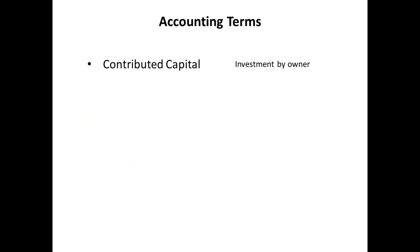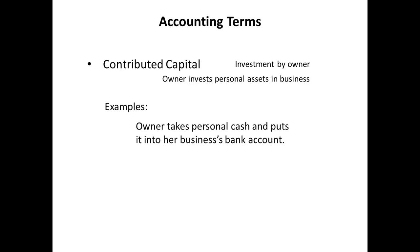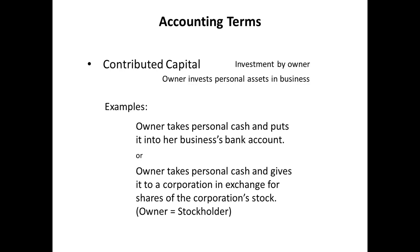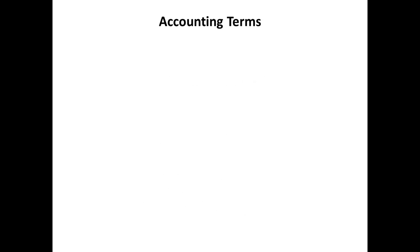The next term is contributed capital. We define this as investment by owner. An investment by owner means that an owner took personal assets and transferred them into the business's name. For example, when my neighbor started the lawn business, he probably took some of his personal cash and deposited it into the business's bank account. Another example is when a person gives cash to a corporation in exchange for shares of the corporation's stock. So personal assets are transferred from owners into the business's name — this is an investment by owner. Contributed capital is the result of an owner putting assets into a business.